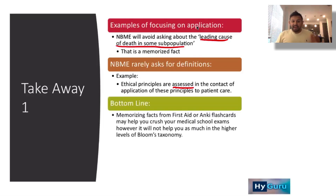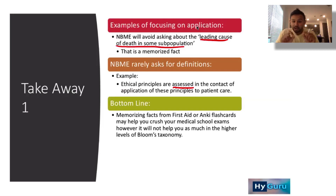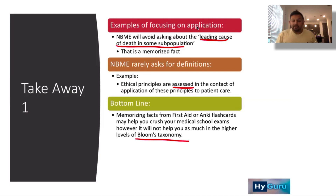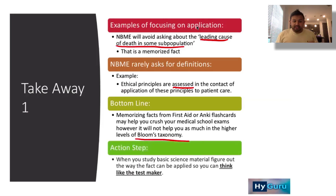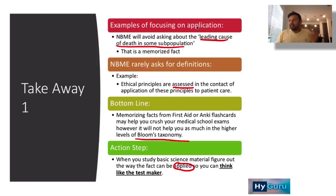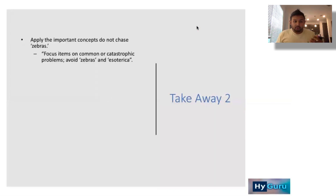Memorizing facts from First Aid or Anki flashcards may help you crush medical school exams, which can be very detail-oriented. However, for the USMLE, the secret to success is focusing on the higher levels of Bloom's taxonomy. When studying, figure out how material can be applied in a question so you can think like the test maker. That's takeaway number one.